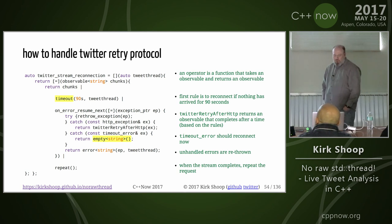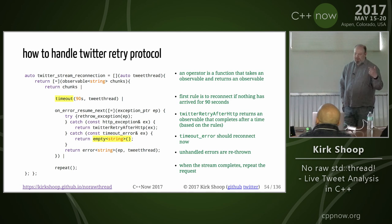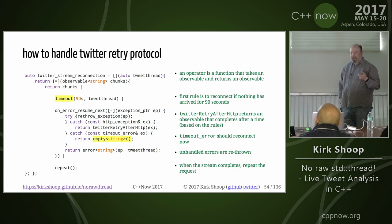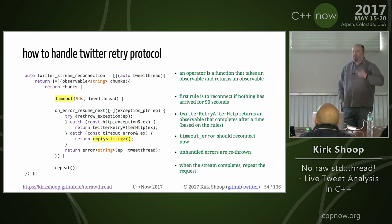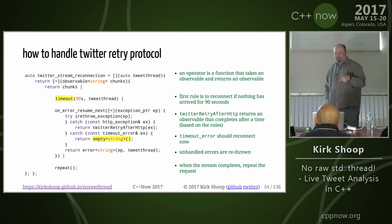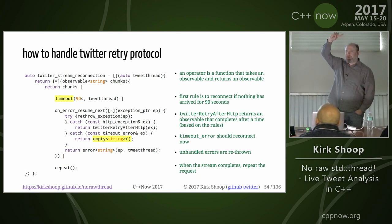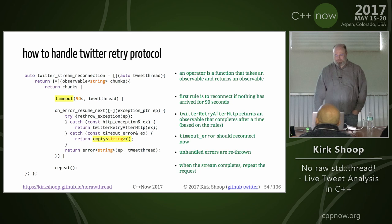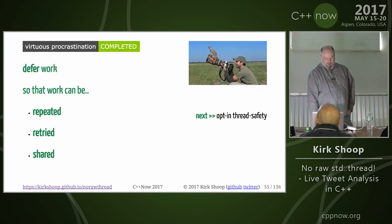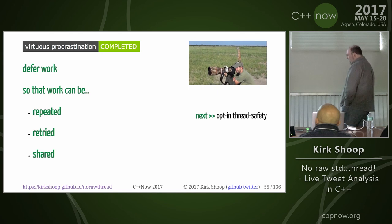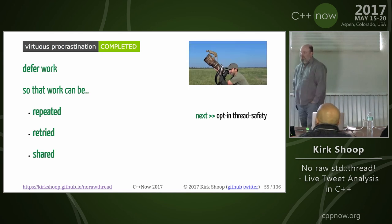Whatever the on_error lambda returns is a new stream that gets subscribed to, and when it completes, 'repeat' will resubscribe to the whole thing. That's why returning a timer that's going to complete in the future will cause me to wait a while before I restart everything. This 'repeat' operator is what actually goes all the way up to the 'defer' on the previous slide, re-signs the URL, restarts the HTTP request, and continues. So virtuous procrastination: we use deferral so that work can be repeated, retried, and shared.